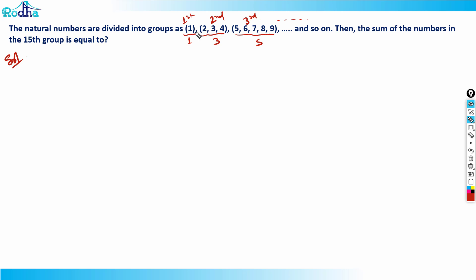You can observe that in the first group, the first element is one, and the last element is also one. In the second group, the last element is four. In the third group, the last element is nine, and it goes like that. So in the fourth group, the last element will be sixteen. This is a perfect square pattern — one squared, two squared, three squared, four squared.